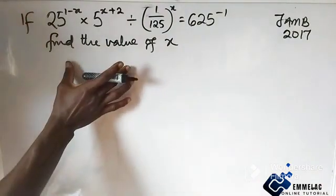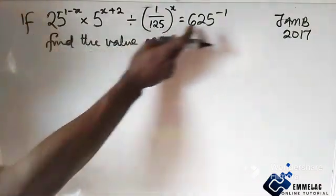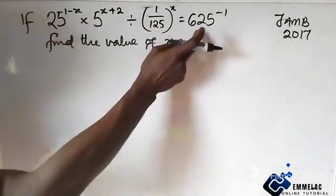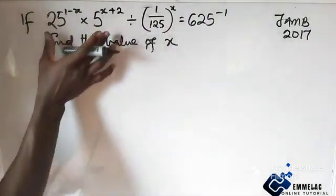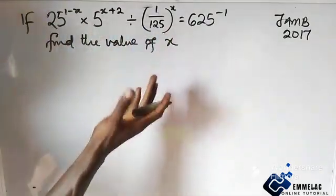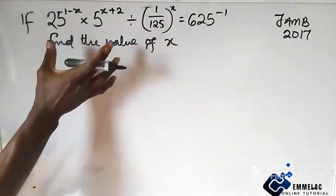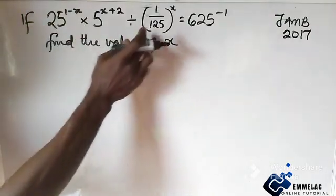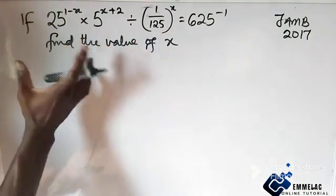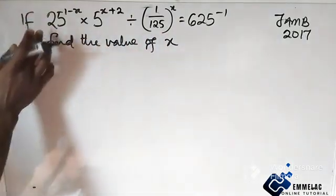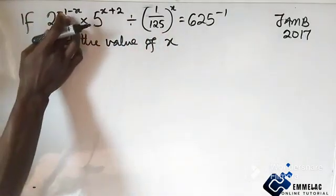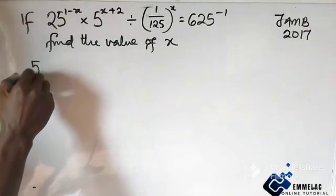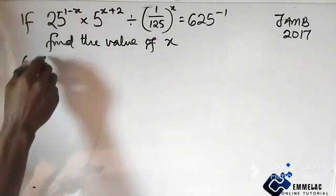Looking at this, you can see that the common factor between the terms is 5. This makes our work easier. By simplification, we need to reduce everything to a base of 5. So reducing 25, we have 5 raised to power 2.